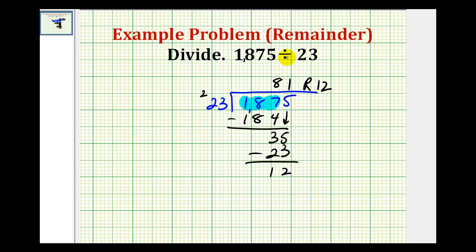So 1875 divided by 23 equals 81 with a remainder of 12. So what that tells us is that 81 times 23 plus a remainder of 12 would equal 1875.